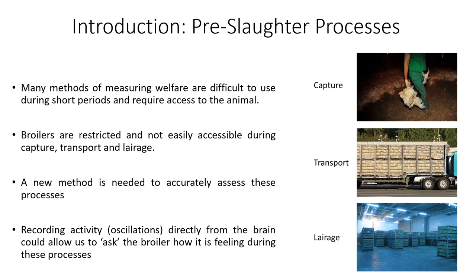During capture, multiple broilers are restrained, inverted, and carried to transport modules — often three birds per hand to save time, despite this not being the recommended procedure. Transport modules are then loaded onto lorries and birds are transported to the processing plant, where modules are unloaded and stacked. Birds then experience lairage, left in this environment to calm down prior to stunning and slaughter. This project aimed to develop a new welfare measure to assess simulated pre-slaughter processes, recording activity directly from brain areas involved in emotional processing.